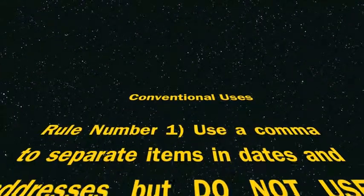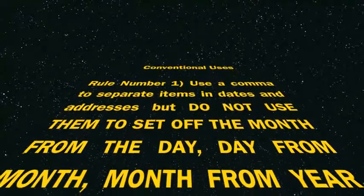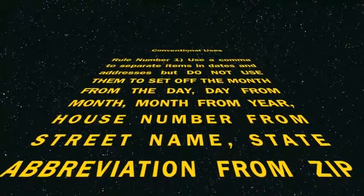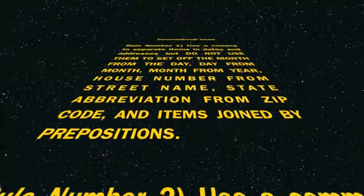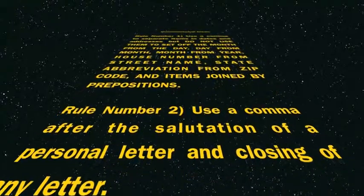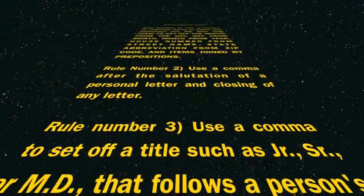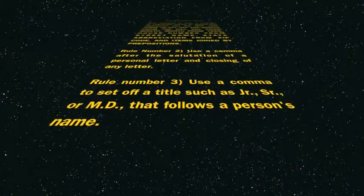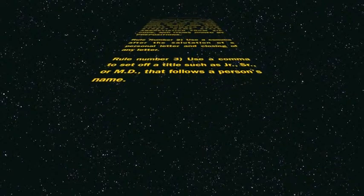Conventional uses. Rule Number 1: Use a comma to separate items in dates and addresses. Do not use commas to set off the month from the day, the day from the month, the month from the year, the house number from the street name, the state abbreviation from the zip code, or items joined by prepositions. Rule Number 2: Use a comma after the salutation of a personal letter and the closing of any letter. Rule Number 3: Use a comma to set off a title, such as Junior, Sr., or M.D., that follows a person's name.